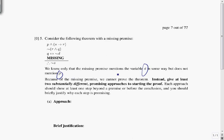Because of the missing premise, we cannot prove the theorem. Well that's not always true. We could be missing a premise, and the premise could turn out not to be necessary to prove the theorem, but apparently it is true in this problem.